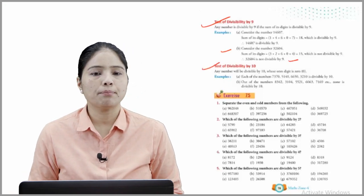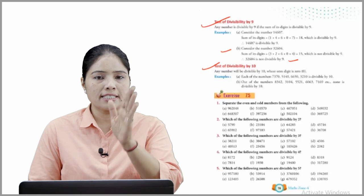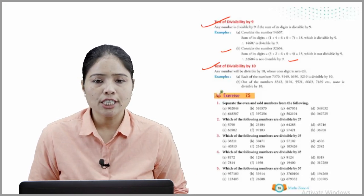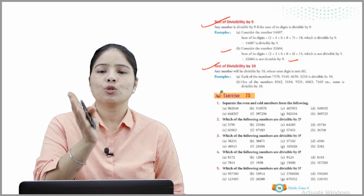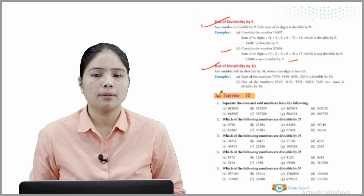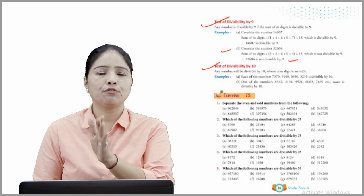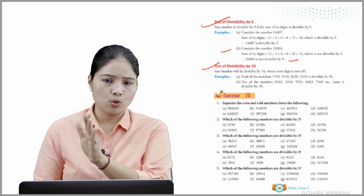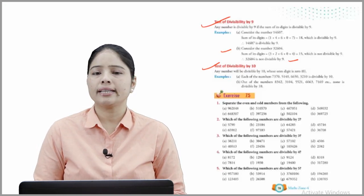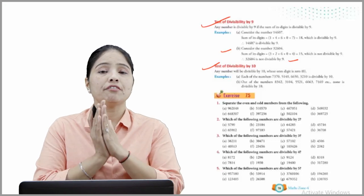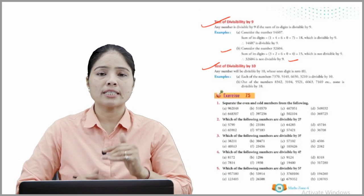Test of divisibility by 10: Any number will be divisible by 10 whose ones digit is 0. For example, 7370, 5140, 6650, and 3210 are divisible by 10. None of the numbers 83, 42, 3104, 5521, 6063, 7169, or 609 is divisible by 10, because none of them has 0 at the ones place.